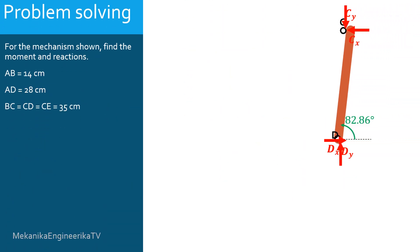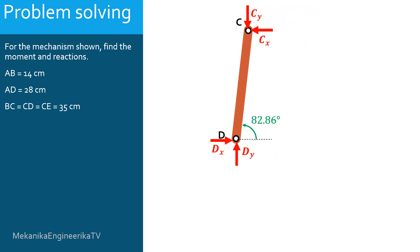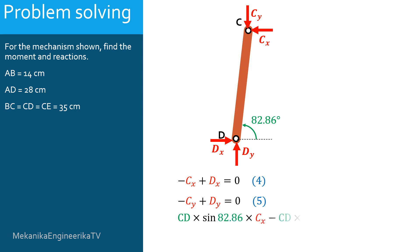For bar CD, equilibrium of forces along the horizontal direction gives: minus CX plus DX equals 0 — equation 4. Equilibrium of forces along the vertical direction gives: minus CY plus DY equals 0 — equation 5. Equilibrium of moments around point D, with counterclockwise positive, gives: CD·sin(82.86)·CX minus CD·cos(82.86)·CY equals 0 — equation 6.